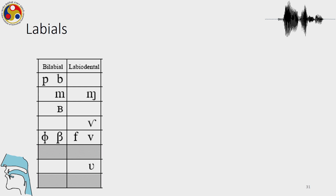There are some trills — bilabial trills are there. They are approximants and in total we have stops, we have nasals, we have trills, we have fricatives and we also have approximants which could be produced by the labial region.